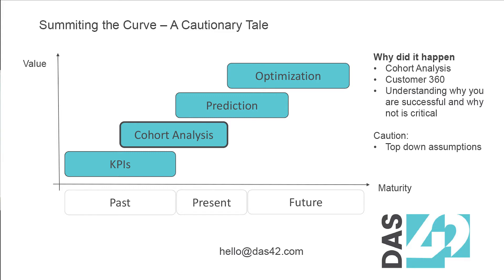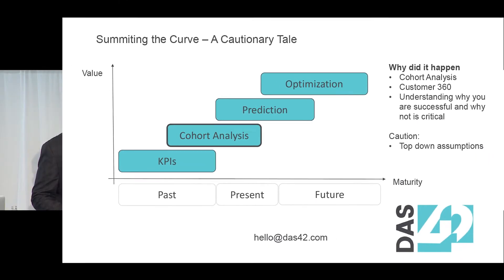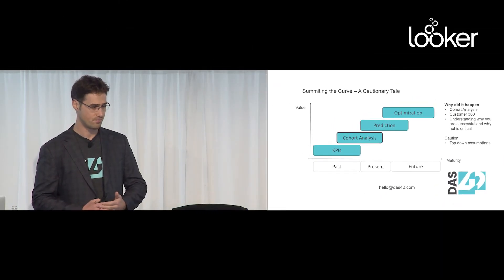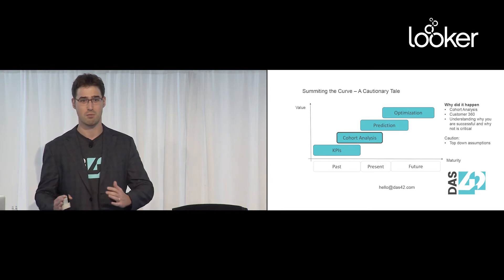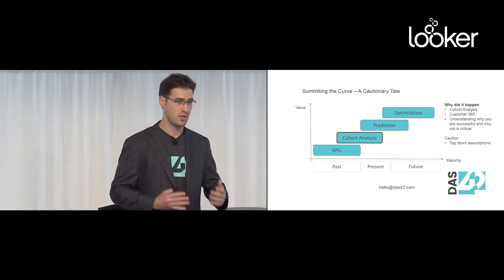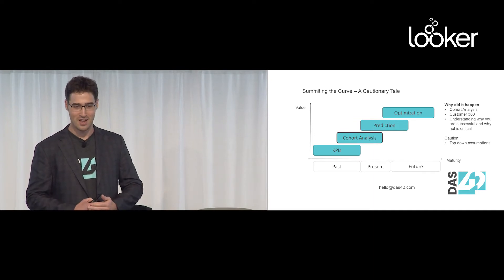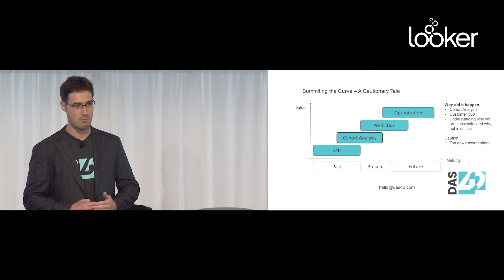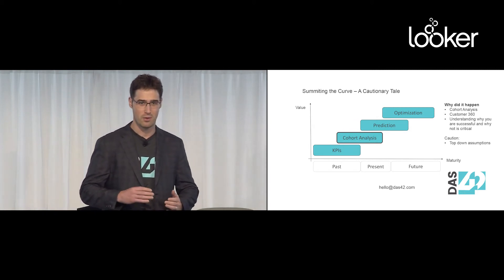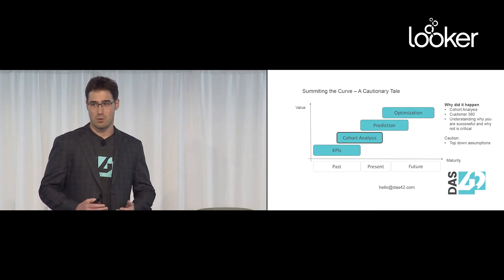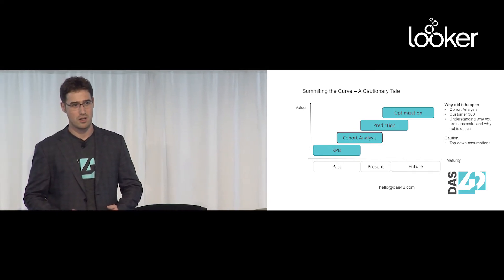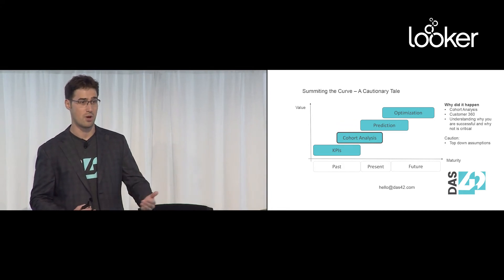Oftentimes we do a customer 360 dashboard where you get a full understanding of your customers. The biggest 'don't' I would put here is the top-down assumption. We had this scenario with a big company, over 100 years old, where the CEO told me to build a cohort analysis with his customers in six distinct buckets. I was pretty sure that wasn't exactly what he wanted, but he insisted, so we built it out in a flexible way. And I think 82% of his customers were in bucket number one, and the rest were pretty much single digits. That was absolutely not what he wanted.